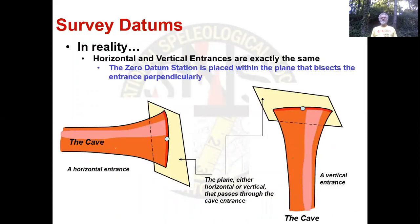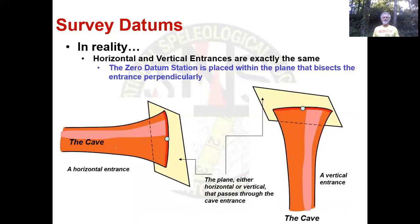In reality, it's essentially the same for both a vertical and horizontal entrance. You can see on the left a horizontal entrance with a vertical plane at the entrance, and the survey datum is placed in that plane. On the right is a vertical entrance with a horizontal plane at its entrance, and again the zero datum has been placed within that plane. So essentially, you place the zero datum in the plane that's perpendicular to the entrance.